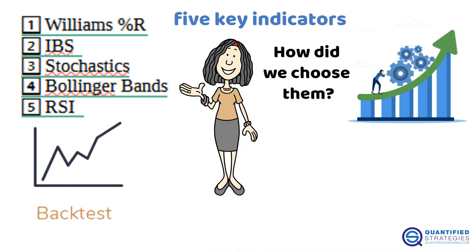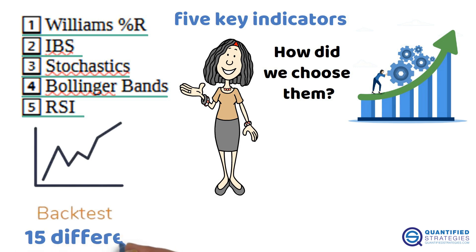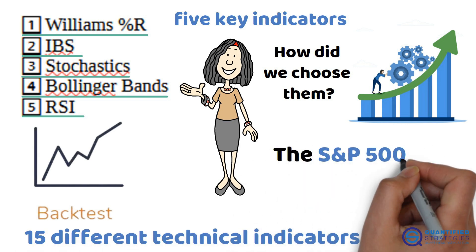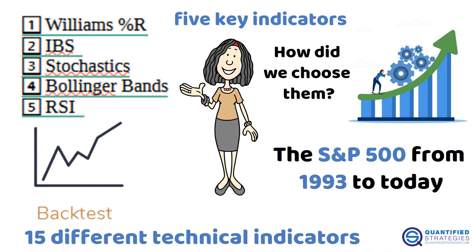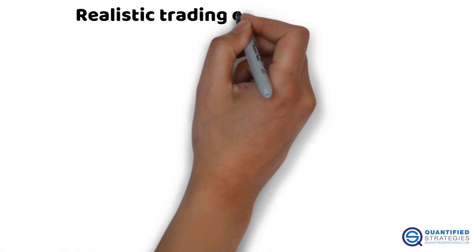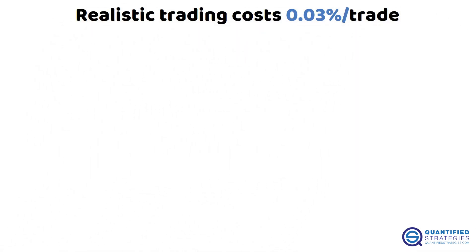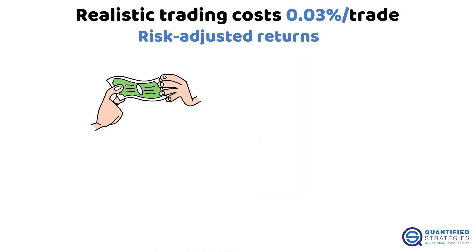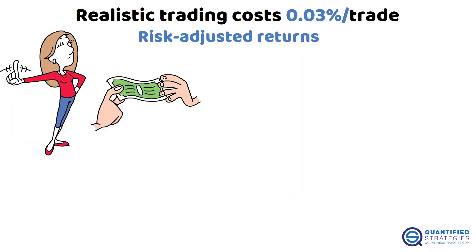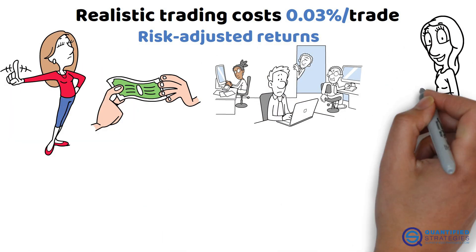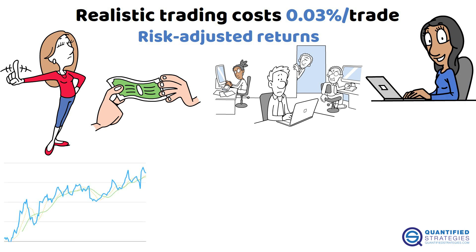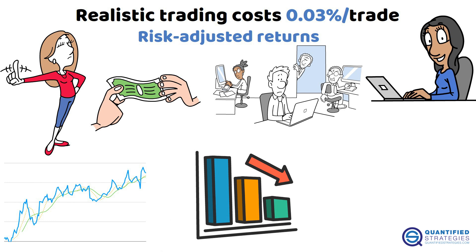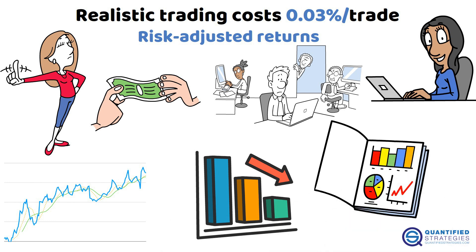How did we choose them? We backtested 15 different technical indicators on the S&P 500 from 1993 to today. We included realistic trading costs — 0.03% per trade for slippage and commissions — and ranked them using risk-adjusted returns. That means it's not just about how much they made, but how they handled the downside. As a trader, you don't want big swings in your equity curve; you want consistent performance with smaller drawdowns. That's what makes a strategy usable in the real world.